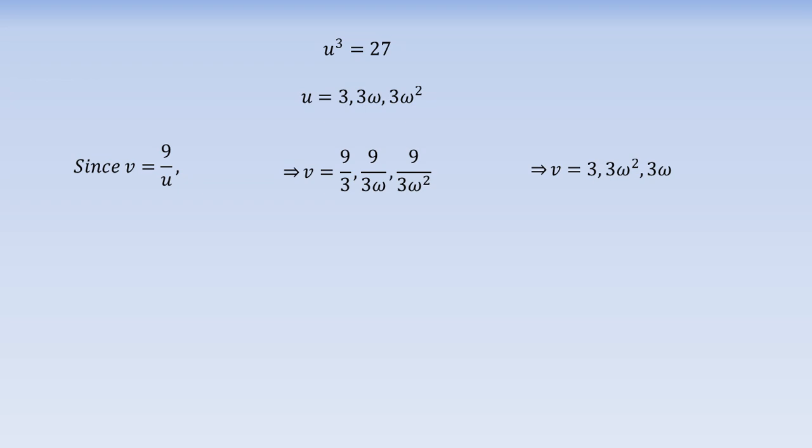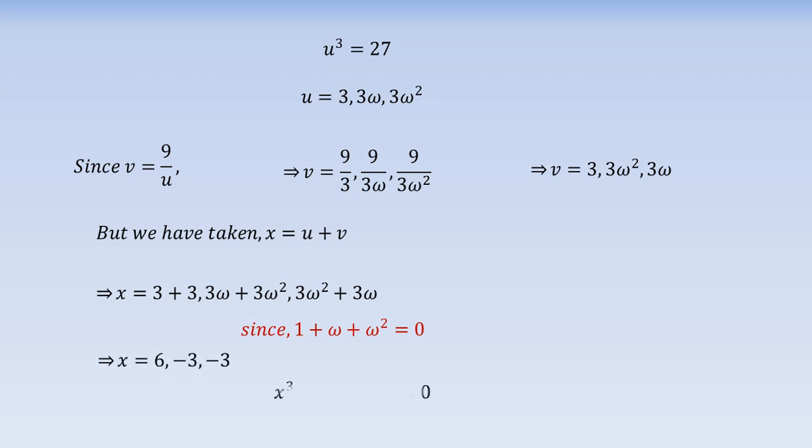Now since x is u + v, we simply obtain the values of x by adding the corresponding values of u and v. Also note that 1 + ω + ω² = 0, since they are the complex cube roots of unity. Finally, we get the values of x as 6, -3, -3, which are the three roots of the equation.